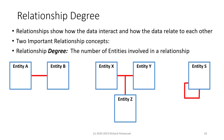Relationship degree is simply a fancy word for the number of entities involved in a relationship. With Entity A and Entity B connected by a single line, the degree is 2 because there are 2 entities involved. With entities X, Y, and Z connected, the degree is 3. Entity S has a relationship with itself — the degree of that relationship is 1, because there is only one entity involved.